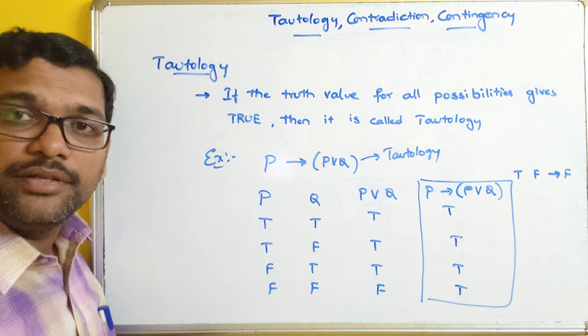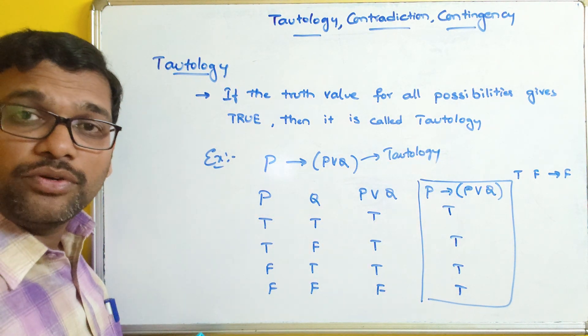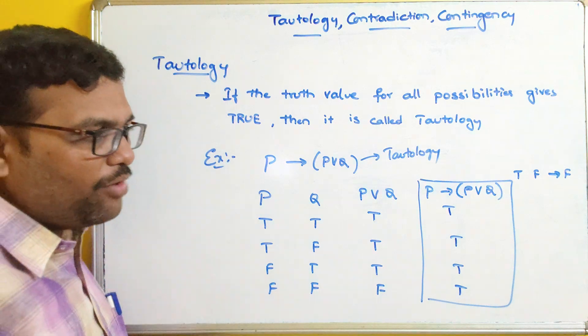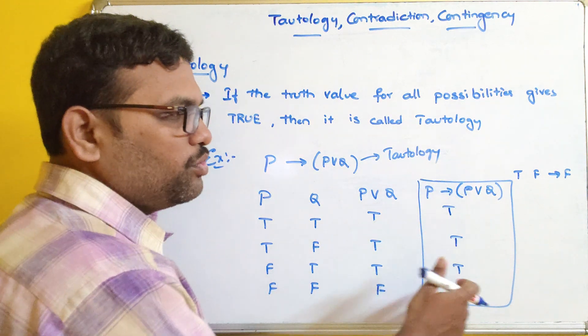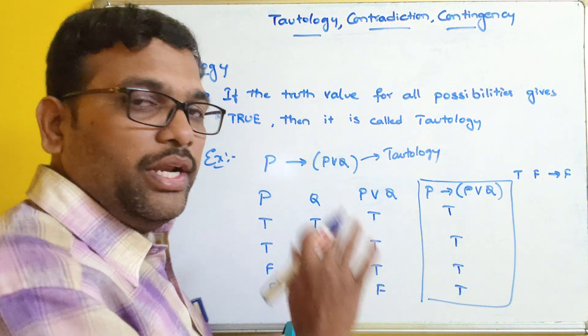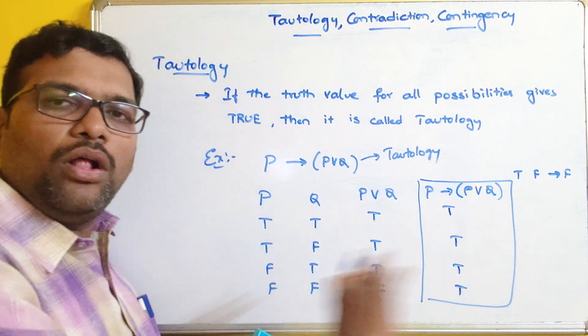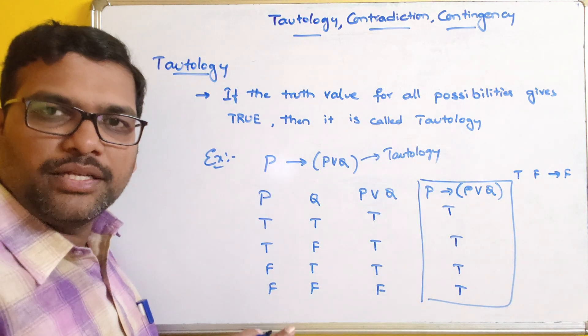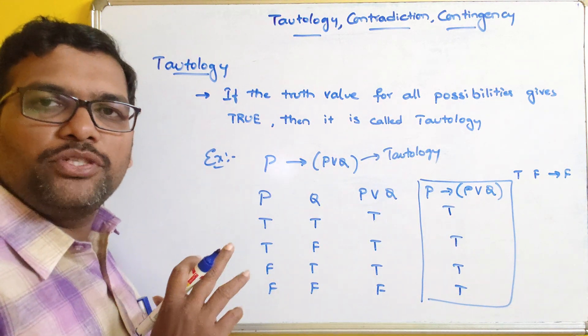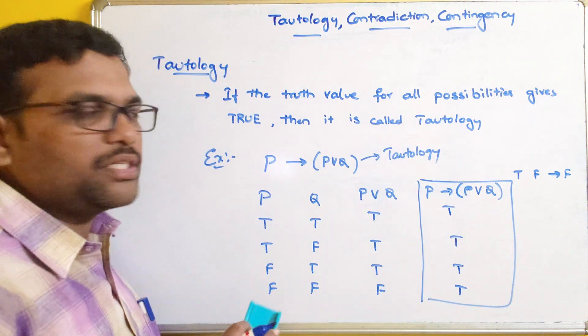So this is also a tautology. We first find the truth table, and if we get only true for all possibilities, then we can say that compound proposition is a tautology.